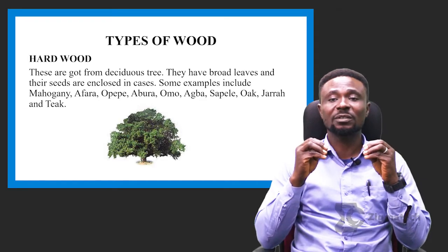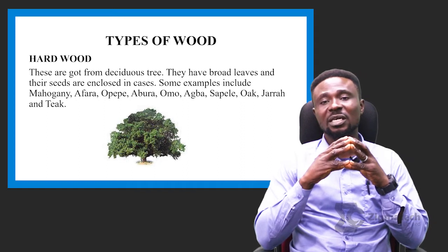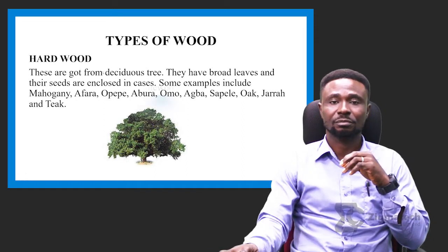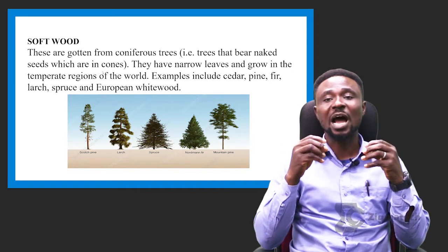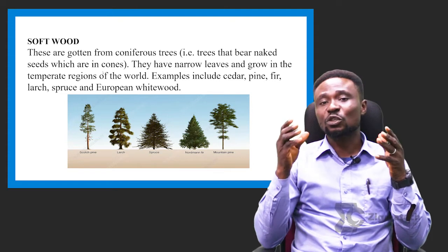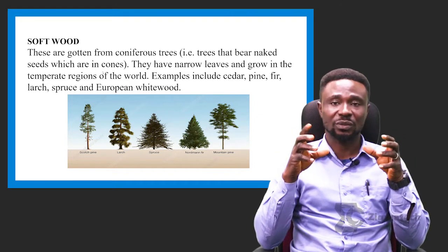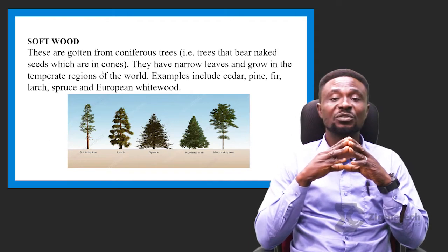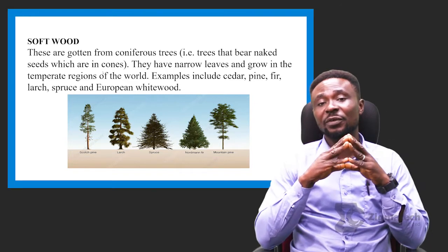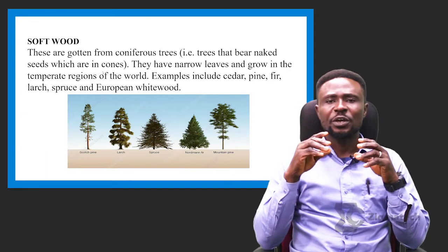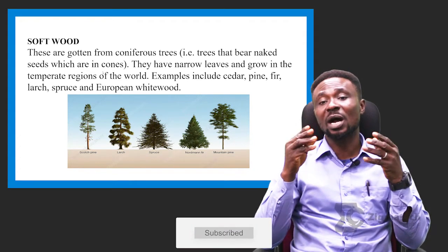Most of these materials are gotten from different parts of the country. For example, Teak is common in the western region of Nigeria. Softwood — not as the name implies that it is soft like foam; it is based on the nature of temperature and how the wood responds to temperature. Softwoods are gotten from coniferous trees, trees that bear naked seeds which are in cones. They have narrow leaves and grow in the temperate regions of the world. Examples include cedar, pine, fir, and European white wood. One of the examples commonly known is the Christmas tree.